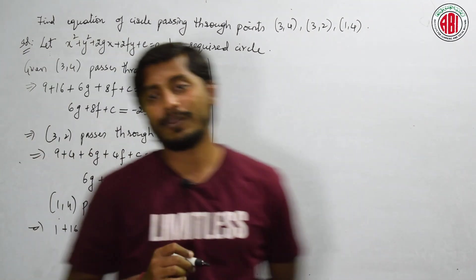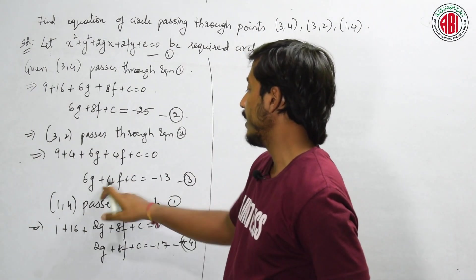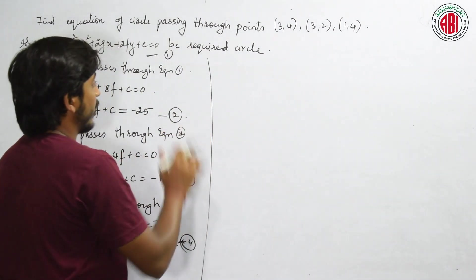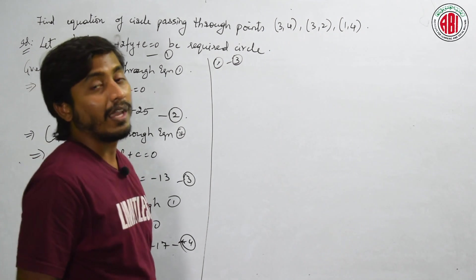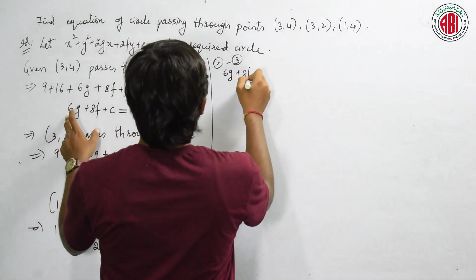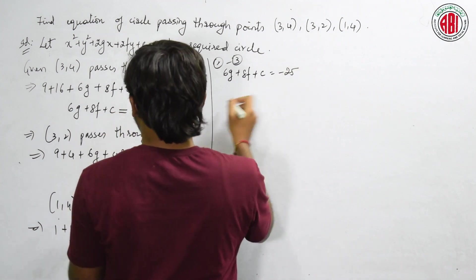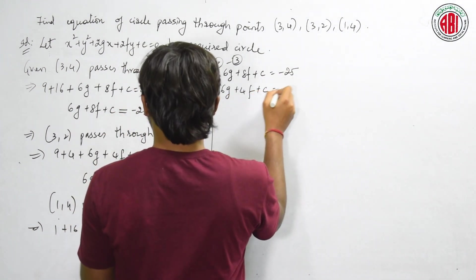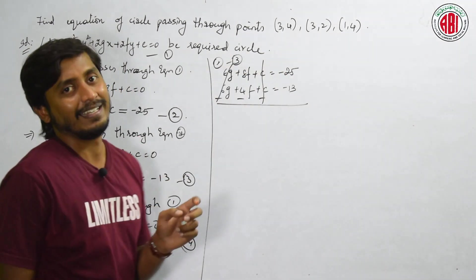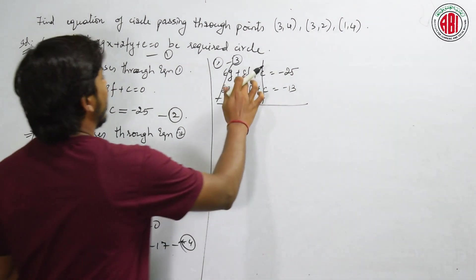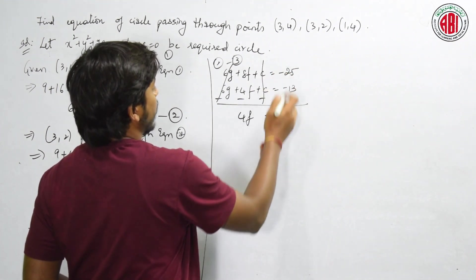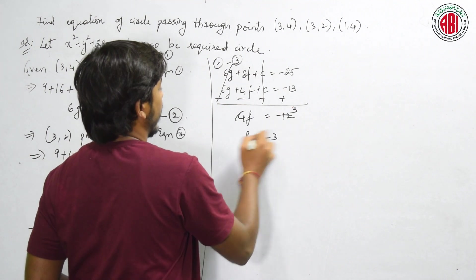Now we have to solve these three equations to find the values of g, f, and c. Follow the standard form. I will subtract equations 2 and 3 first because we can cancel c easily. So: 6g plus 8f plus c equal to minus 25, minus 6g plus 4f plus c equal to minus 13. The 6g and c will get cancelled. 8f minus 4f gives 4f, and minus 25 plus 13 gives minus 12. So 4f equals minus 12, therefore f equals minus 3.